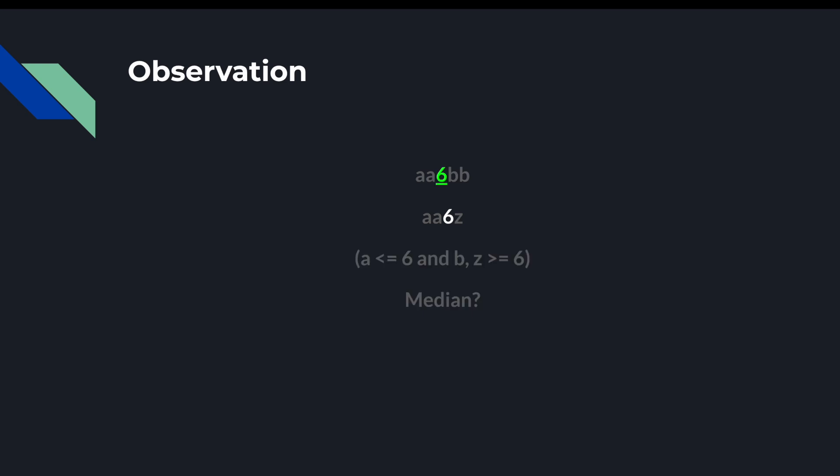Yes, you can. The median here is 6. The length of both arrays combined is 9, so if we were to combine both arrays into one sorted array, we'd want index 4 in that sorted array. Since we know that both arrays are sorted, we know that the elements to the left of 6 are less than or equal to 6. Therefore, the elements labeled as A will be the first 4 elements when you combine and sort both arrays. Therefore, one of the 6s must be index 4. Since the median is the length of both arrays combined divided by 2, we've found our median.